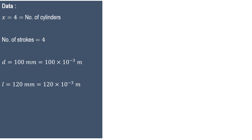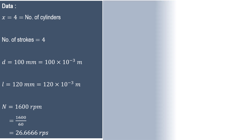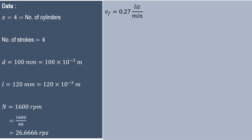Now let's list the given data. Diameter is 100 mm, converted to meters. Stroke length is also converted to meters. Number of cylinders is four; it is a four-stroke engine. RPM is converted to RPS by dividing by 60, giving 26.6666 RPS. The most important part here is the volumetric flow rate of fuel, which is 0.27 liters per minute, that is 0.27 × 10⁻³ m³ per minute.